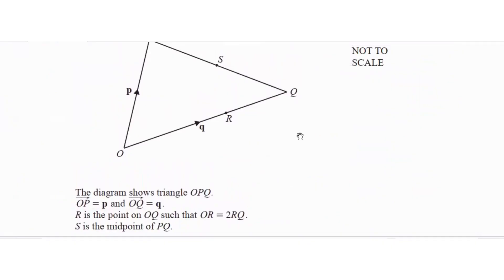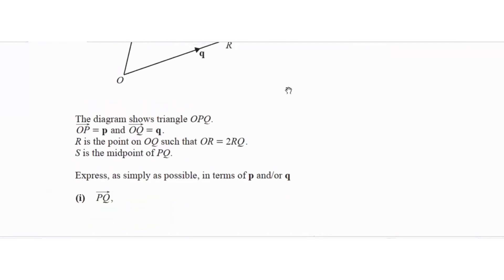The diagram shows triangle OPQ. OP is p, OQ is q. R is a point on OQ such that OR is twice RQ. S is the midpoint of PQ. Express as simply as possible in terms of p and q.